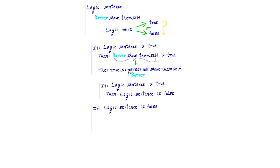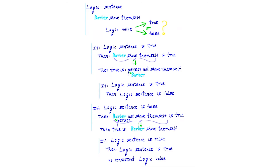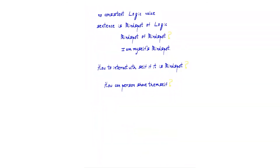Let us try the other way. If the logic sentence is false, then 'the barber has not shaved themselves' is true. The barber is a person, and a person who has not shaved themselves, according to the condition, must have the barber shave that person — which is themselves. So then true is that the barber shaves themselves. So if we start with a false value, we conclude that this must be true. So no consistent logic value may be assigned. In these cases we cannot give a distinguished truth value consistently to the sentence. This sentence is a blind spot of logic.